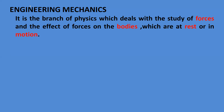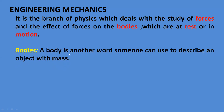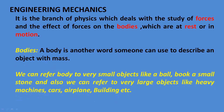The second key point from the definition of engineering mechanics is the body. A body is another word used to describe an object having some mass. We can refer to a body as a very small object like a ball, a book, or a small stone, and also as a very large object like a heavy machine, a car, an airplane, a building, or a railway bridge.